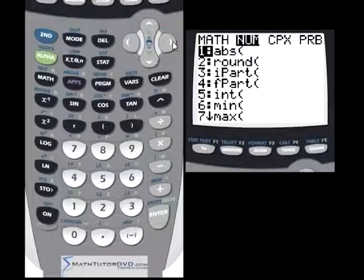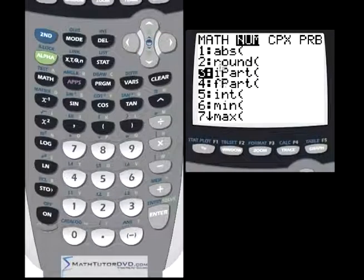What else do we have in this menu here? The number menu. So we have absolute value, we have rounding. The next two functions, number three and number four, are in my opinion, a little bit silly to put in a calculator, but I guess there's a chance that you might use it. The i is to return the integer part of a number and the f is to return the fractional part of a number.